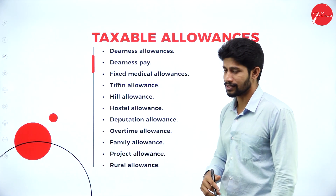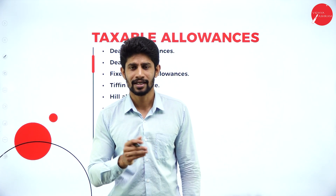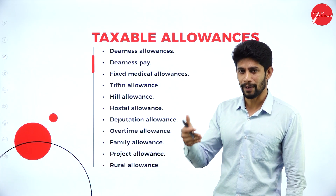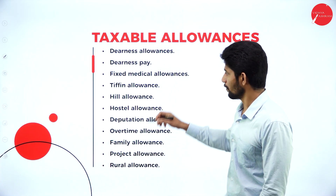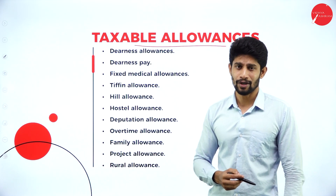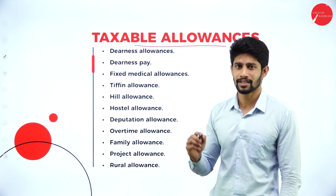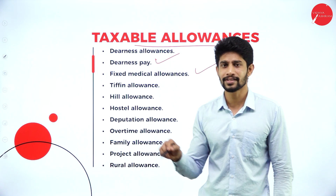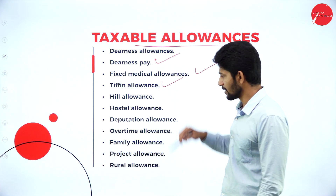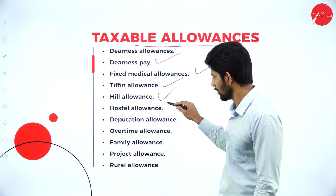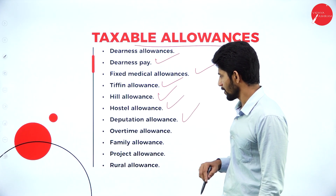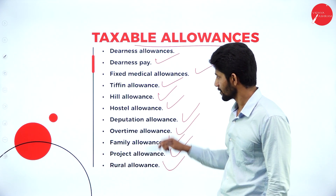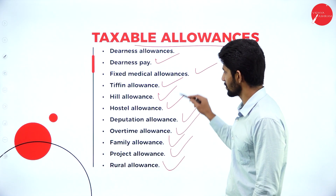In allowances, we have mainly three categories: taxable, partially taxable, and fully exempted allowances. Looking at the taxable allowances: dearness allowances — if provided by the employer, it is fully taxable. Dearness pay — also fully taxable. Fixed medical allowances — fully taxable. Tiffin allowances — taxable. Hill allowances — taxable. Austral allowances — taxable. Deputation allowances — taxable. Overtime allowances — taxable. Family allowances — taxable. Project allowances and rural allowances — these are all the allowances which are taxable.